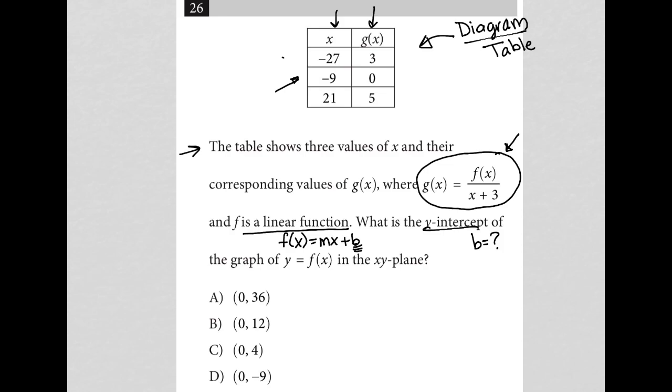Taking this first row here, when x is negative 27, g(x) is 3. If I put that into this equation, g(x) would turn into 3 equals f(x) would turn into f of negative 27 over x would turn into negative 27 plus 3. So we'd have 3 equals f of negative 27 over negative 24. I can multiply both sides by negative 24, and I'd have negative 72 is equal to f of negative 27. So f of negative 27 is equal to negative 72.